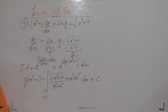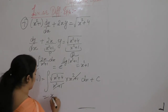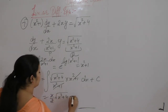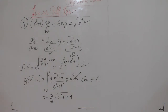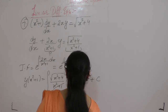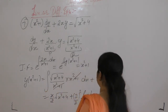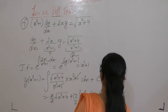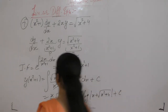Now, what is the formula? The integral of square root of x² + a² is equals to x/2 · √(x² + a²) + a²/2 · log of (x + √(x² + a²)) + c.